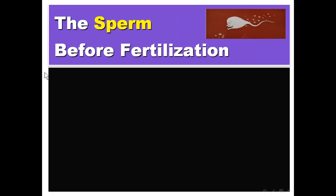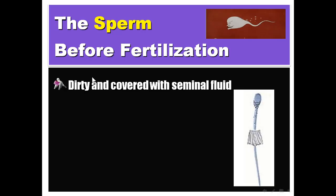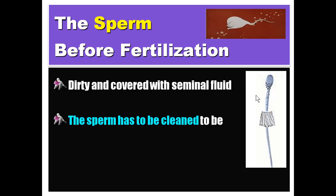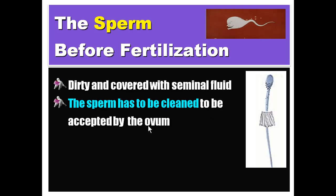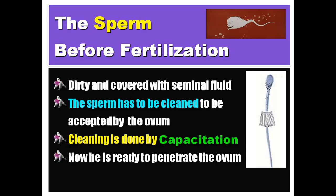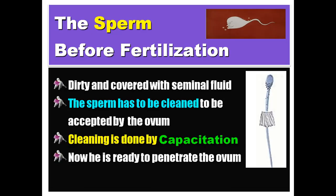Before talking about fertilization, let us see how the sperm looks like before fertilization. The sperm is dirty and covered with seminal fluid, so it has to be cleaned. The cleaning of the sperm is performed by a process called capacitation. After capacitation, the sperm will be ready to penetrate the ovum, and the penetration of the ovum is done by another reaction called the acrosome reaction.